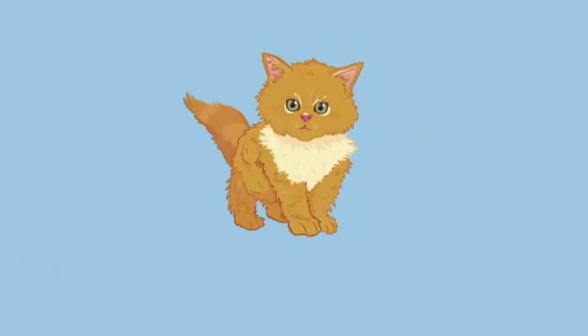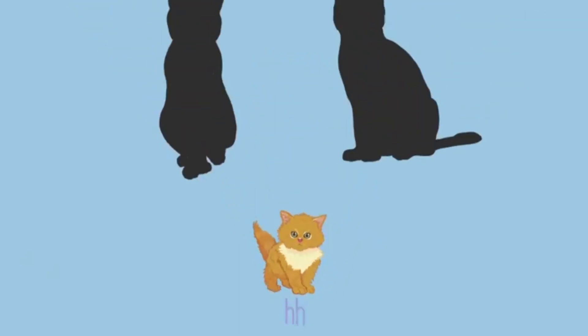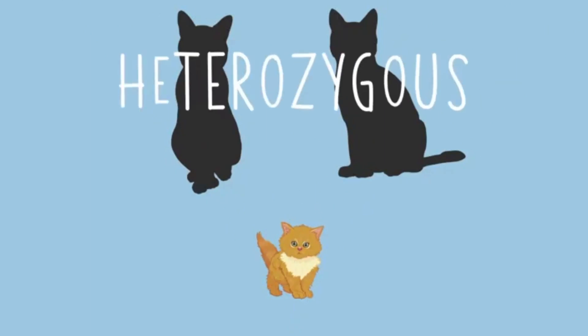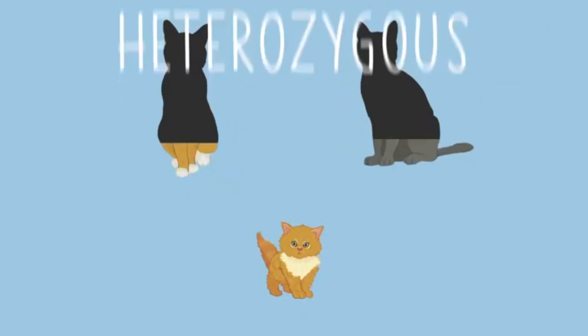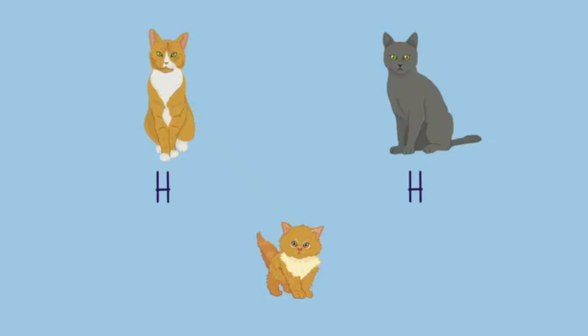If a kitten has long hair, we know both of its alleles must be recessive. This also tells us that the parent cats are heterozygous. They are both short-haired, so must have a dominant short hair allele. But they must also both have a recessive allele to pass on to their long-haired kitten.